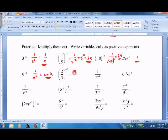2 thirds to negative 2. Well, now we're starting to see we can just flip it, and it gets us 9 fourths. 2 to negative 3 on the bottom is like 2 to the third on top. That's 8.